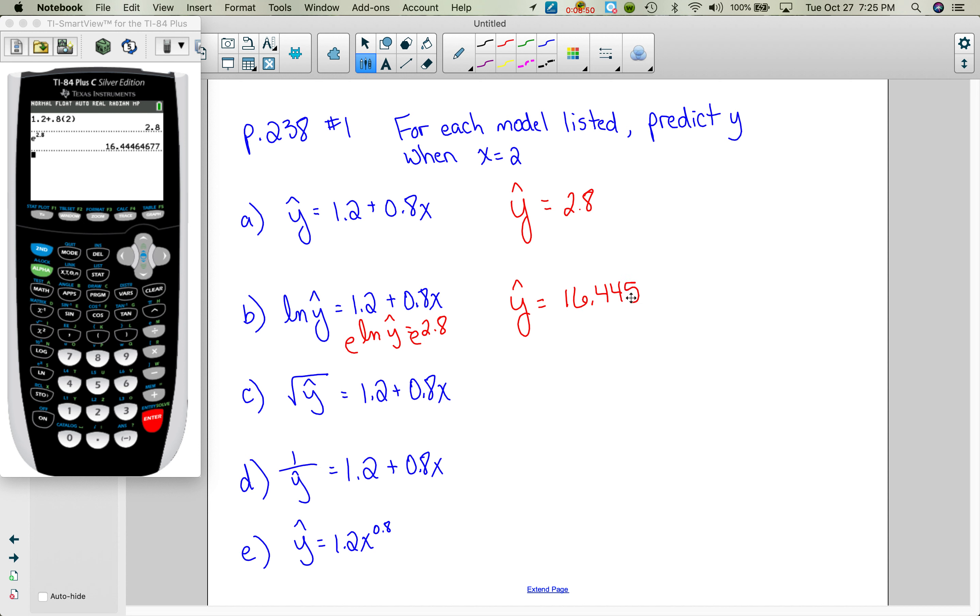For the next one, I plug in a 2, which we've already found the value, so we get the square root of y hat equals 2.8. I need to undo square rooting. So I square both sides. And I'll get y hat equals 7.84. So all we're practicing is that process of undoing.